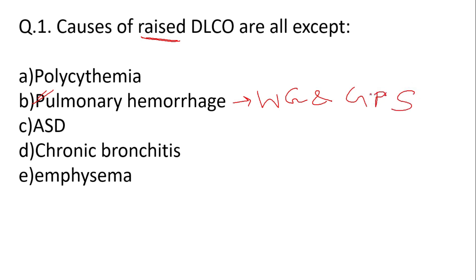However, there are other important causes of raised DLCO which are common MRCP questions — these include polycythemia, ASD, and chronic bronchitis. Remember, emphysema is a cause of decreased DLCO.